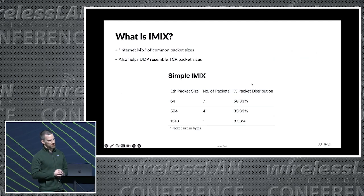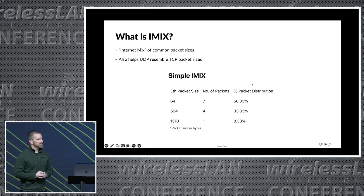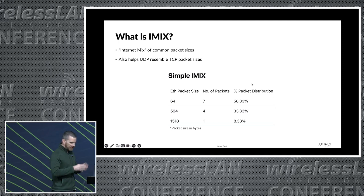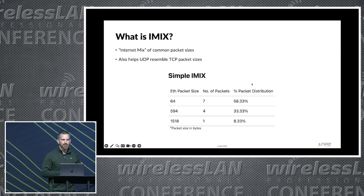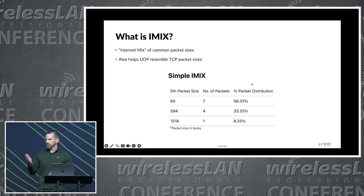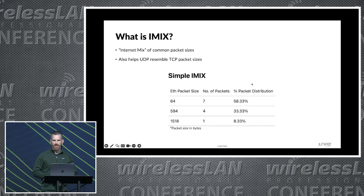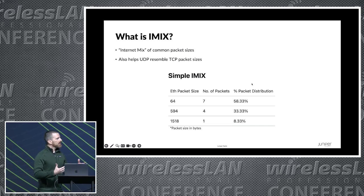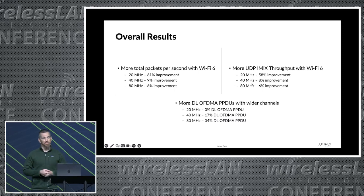I looked at different channel widths. One thing I did that's a little different is I used iMix packet sizing on those web page streams. If you're familiar with firewalls, you may have seen this — it uses smaller packet sizes more typical of what we see on the internet, like real internet traffic flows distributed in packet size. These are pretty small packets, so to me this is kind of what OFDMA was designed to help with.